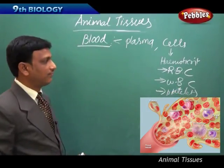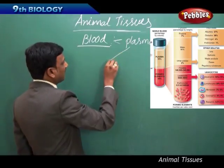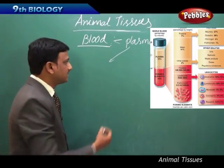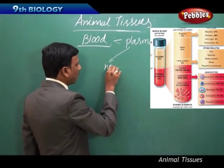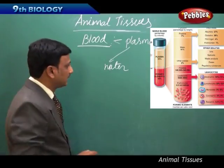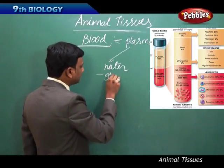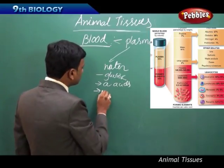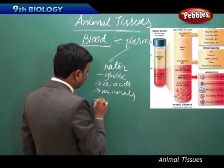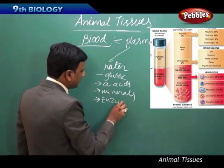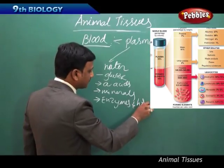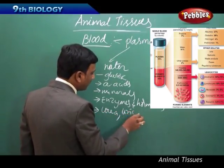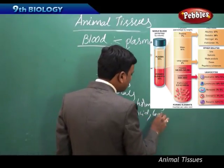Plasma is the fluid part of the blood. It contains different substances, but the major part is water. Along with water, it contains glucose, amino acids, minerals, enzymes, and hormones. It also contains excretory materials like urea, uric acid, and lactic acid. These are the different types of materials found in the plasma of our blood.